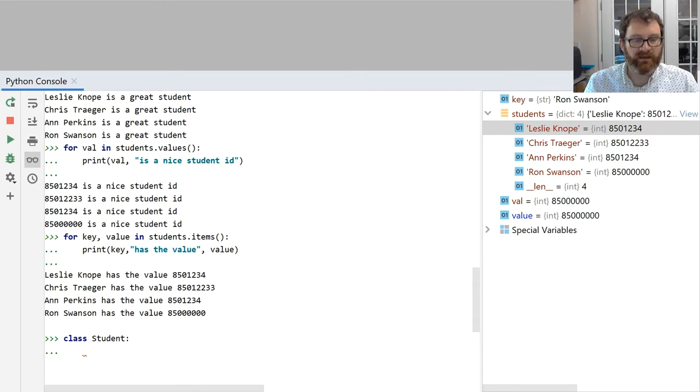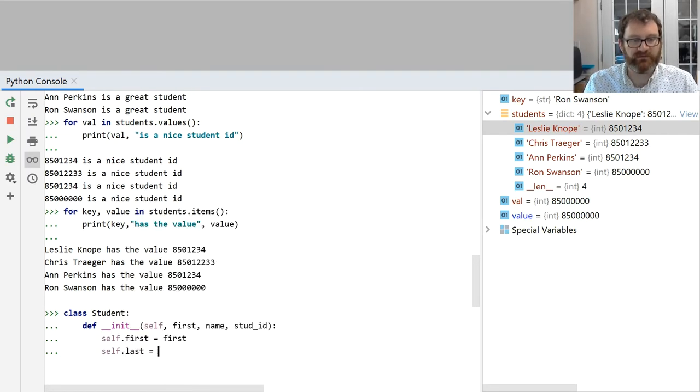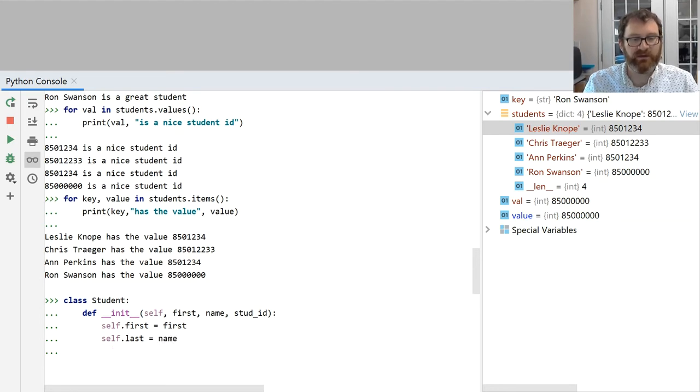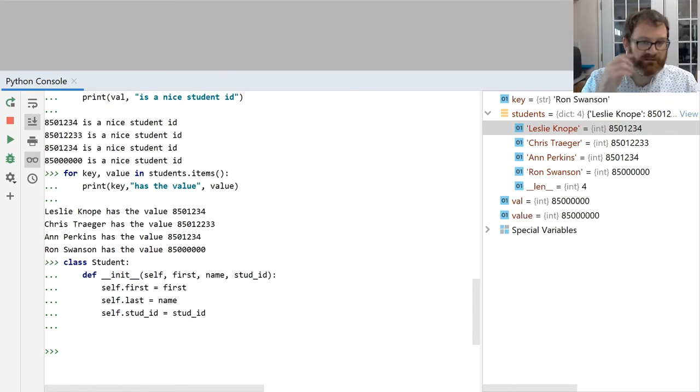Let's define a class called student. And we need to put a constructor. And let's do first name, last name, student ID. And we'll do self.first gets first, self.last gets, oh, I called it name, sorry. Self.student ID gets student ID. Okay, so I've defined this class student.